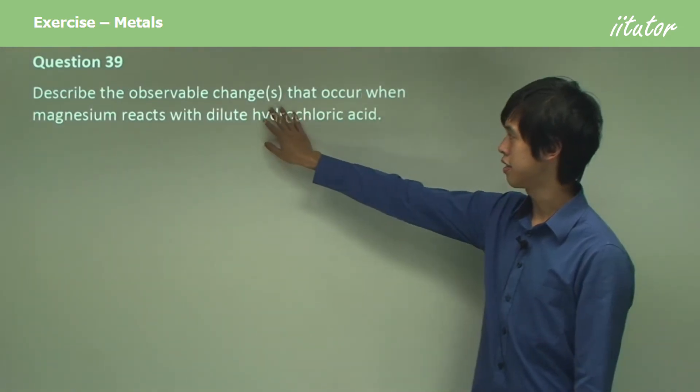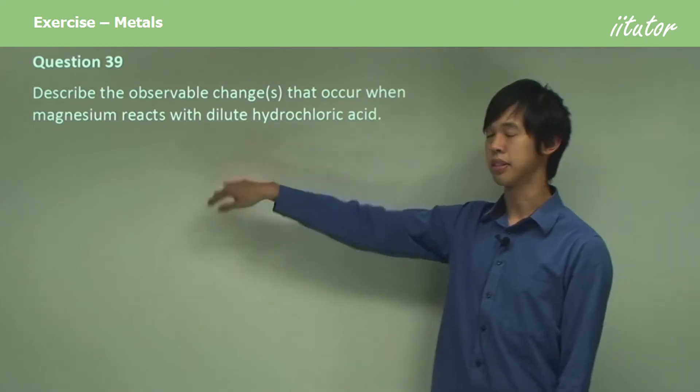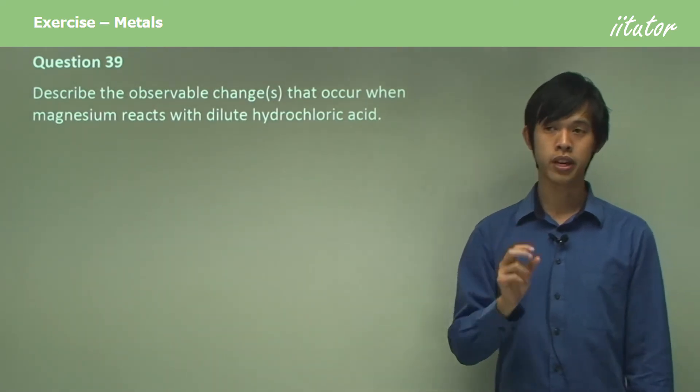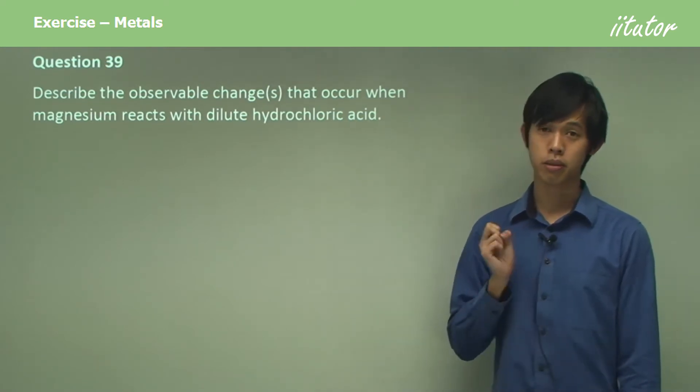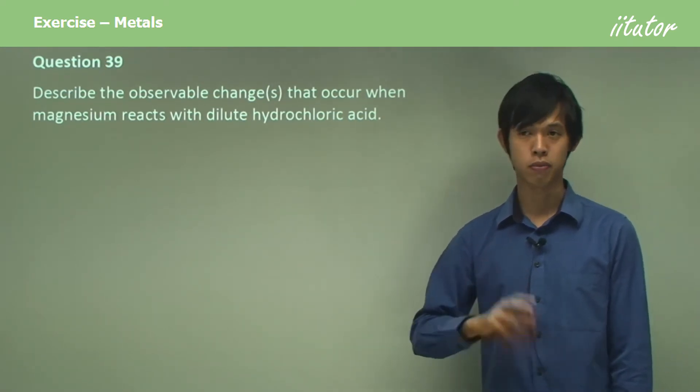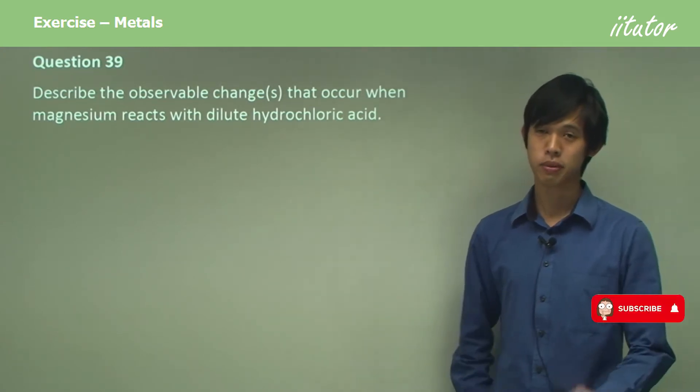Describe the observable changes that occur when magnesium reacts with dilute hydrochloric acid. Always be aware that there are certain things that you can observe and certain things that you infer because you know stuff about chemistry. Just be aware of that.